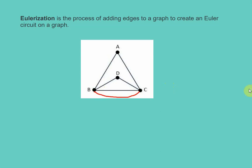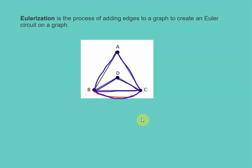Let's try finding an Euler circuit. If I start at vertex B, I could go from B to A to C, D, B, C, and then back to B. Remember, in order for it to be a circuit, it has to start and end at the same vertex. And now we were able to do that.